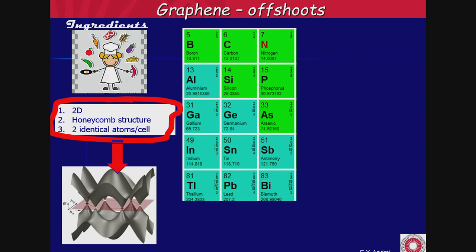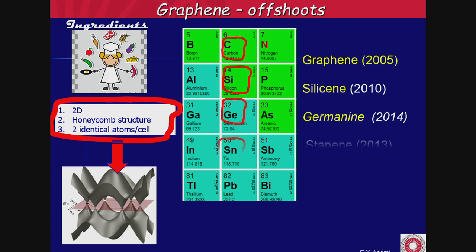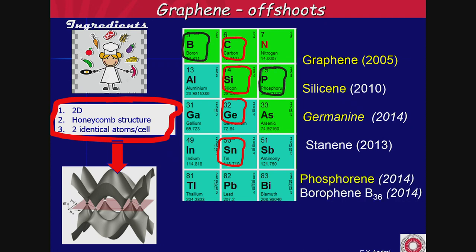Looking at the fourth column where the geometry is the same — if you manage to have sp2 bonding, you get bonds at 120 degrees, and that's what goes into the band structure. People have tried that and actually succeeded in making graphene-like structures out of silicon (silicene), germanene, and stanene. But it doesn't have to be the fourth column — all you need is a honeycomb structure with identical atoms on the two sub-lattices. People have made graphene-like borosene and phosphorene, but all these structures are artificial and unstable.